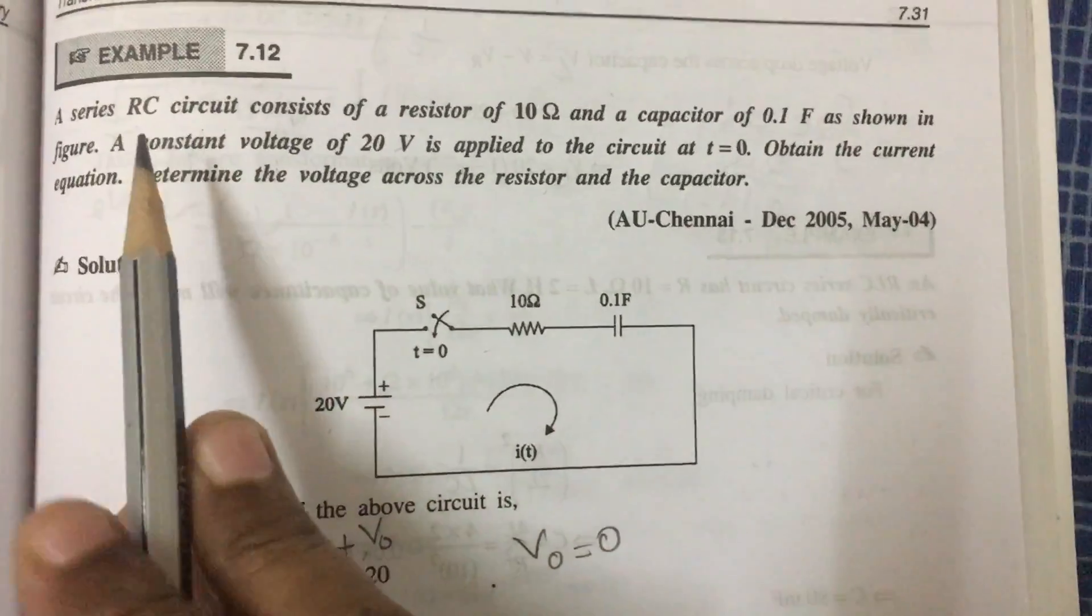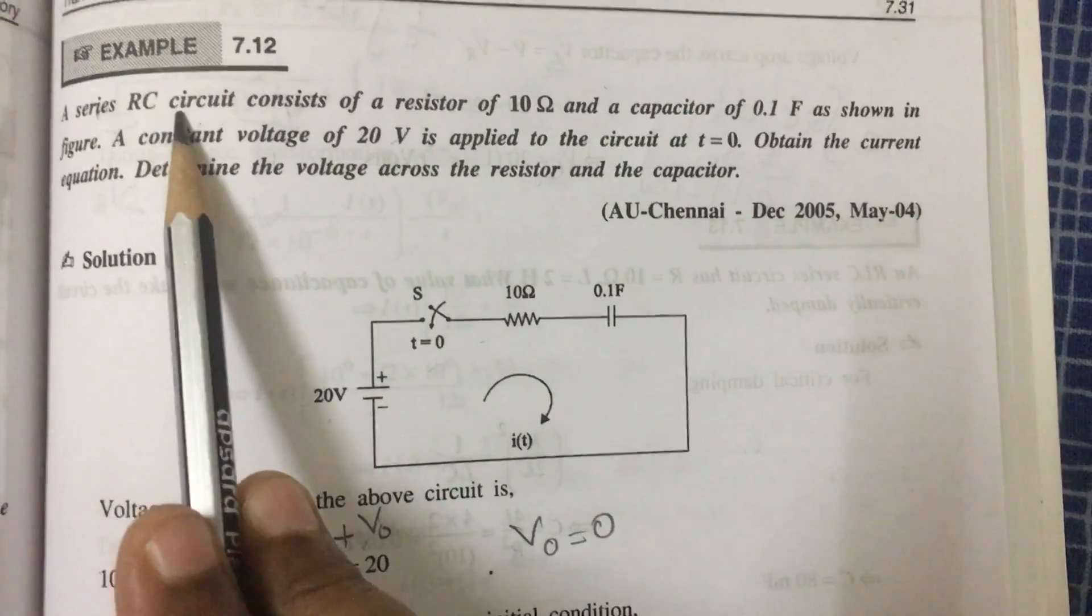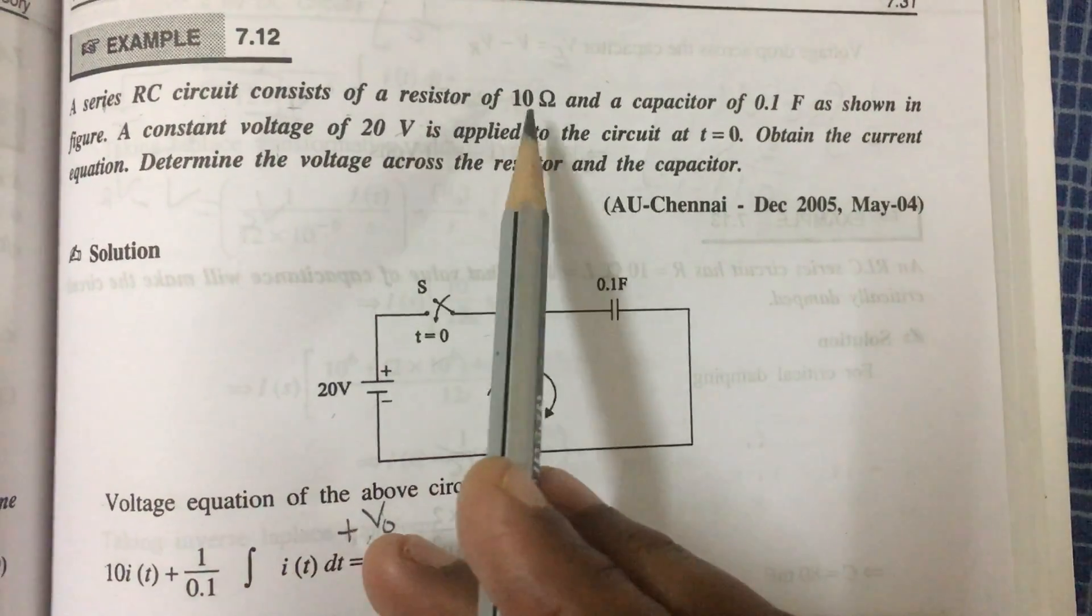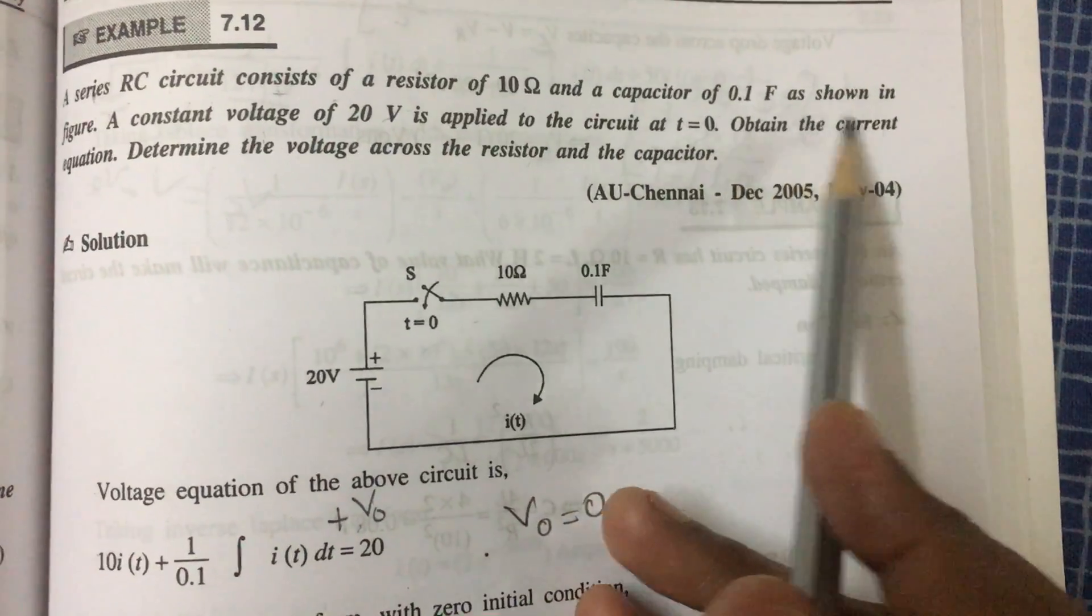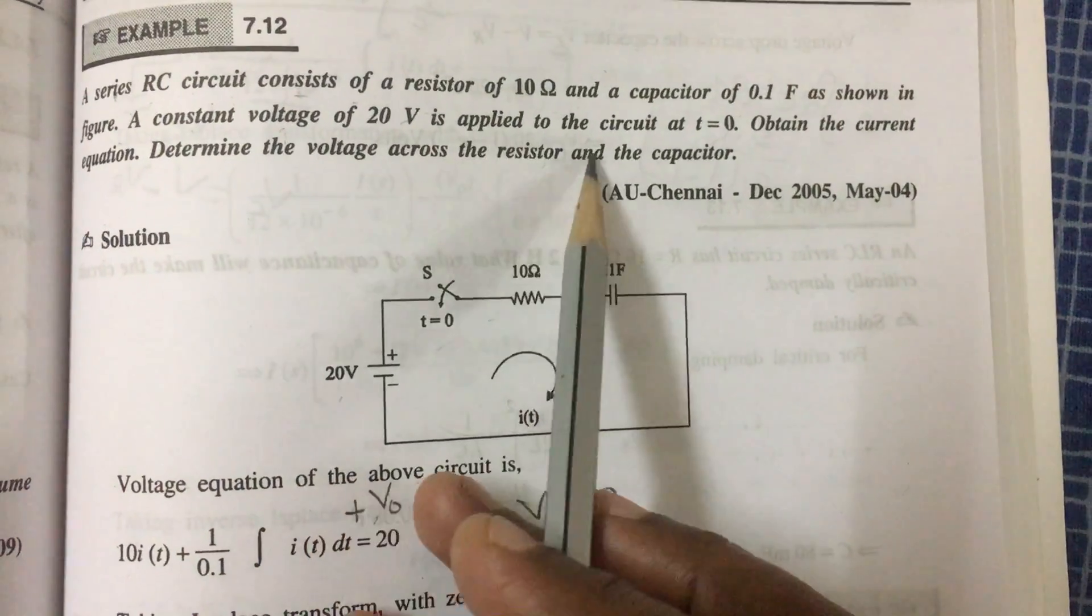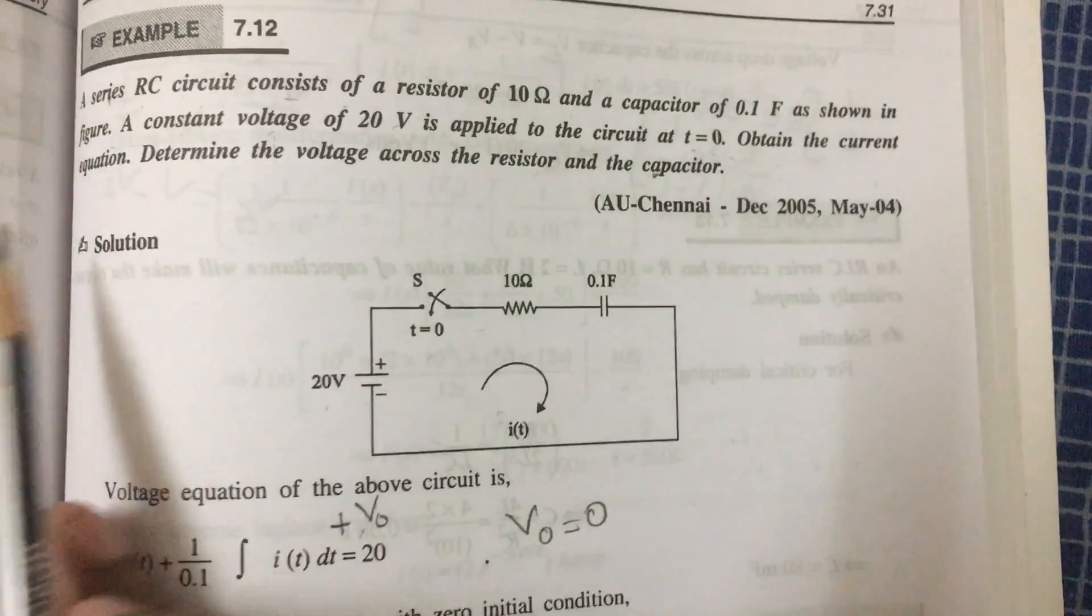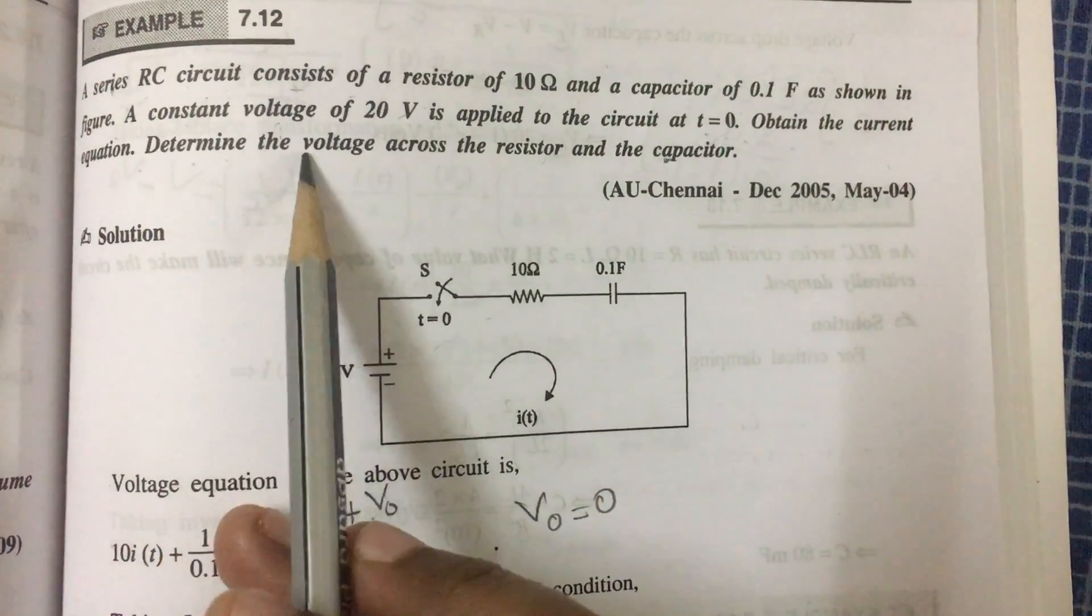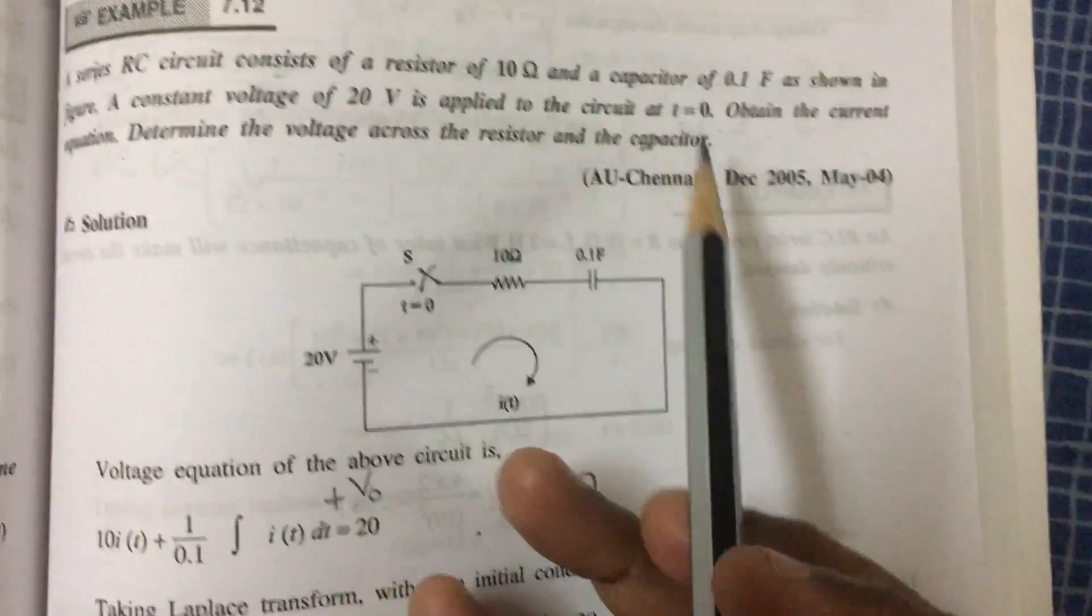Next we can see the RC transient circuit problem. A series RC circuit consists of a resistor of 10 ohm and a capacitor of 0.1 farad as shown in the figure. A constant voltage of 20 volt is applied to the circuit at time t equals 0. Obtain the current equation. Determine the voltage across the resistor and capacitor.